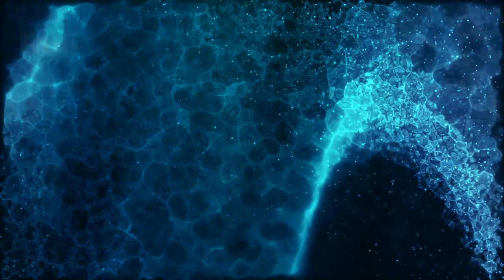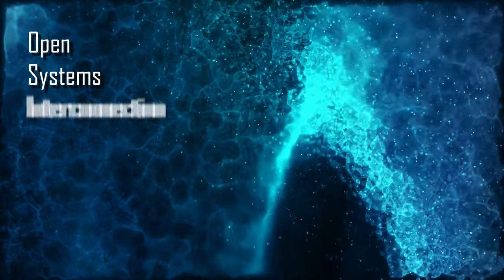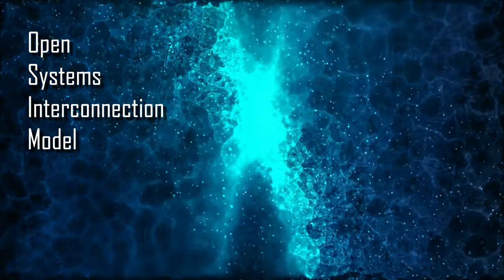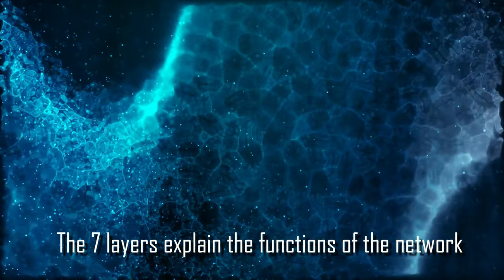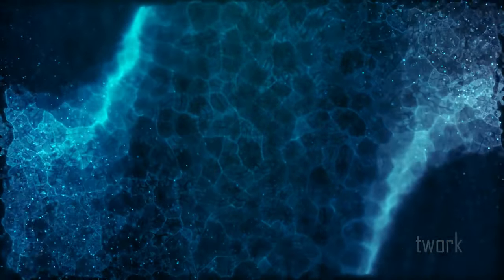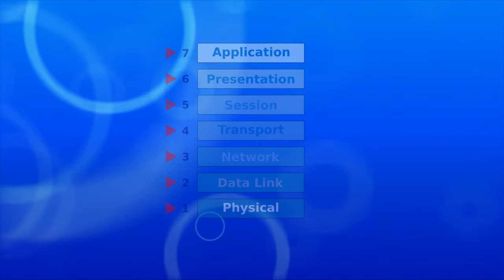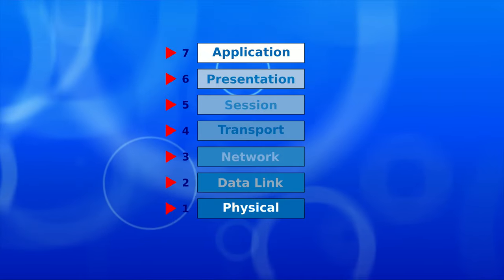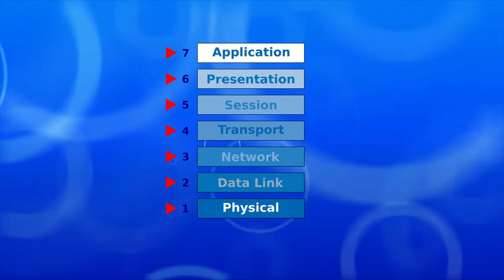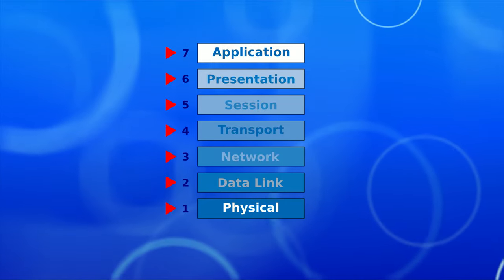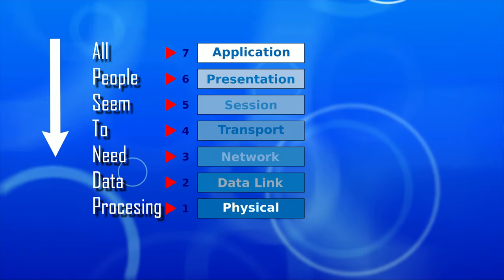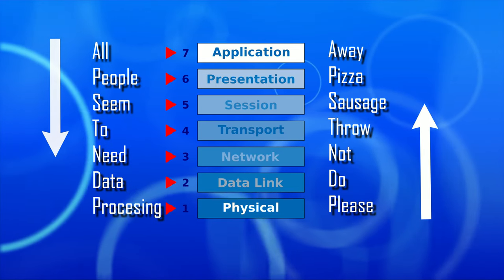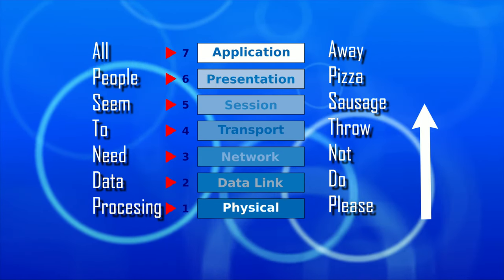So what's the OSI model? The OSI model stands for the Open Systems Interconnection Model, and at the most basic form, it contains seven layers, at which the framework describes and explains the functions of the network. The layers starting from the bottom are Physical, Data Link, Network, Transport, Session, Presentation, and Application. Two mnemonic devices to remember this are from the top down: 'All People Seem To Need Data Processing,' and from the bottom up: 'Please Do Not Throw Sausage Pizza Away.'